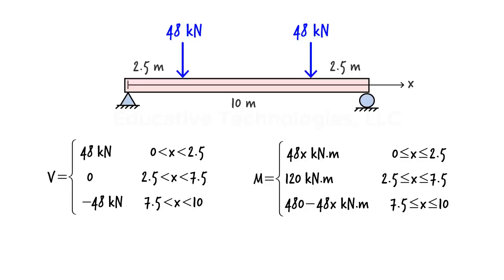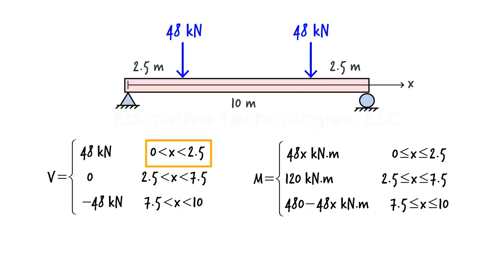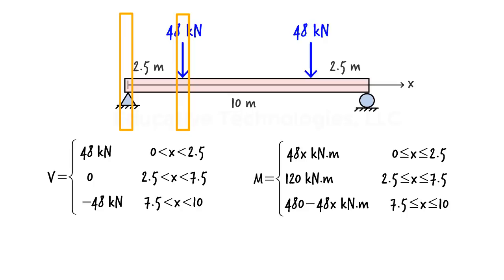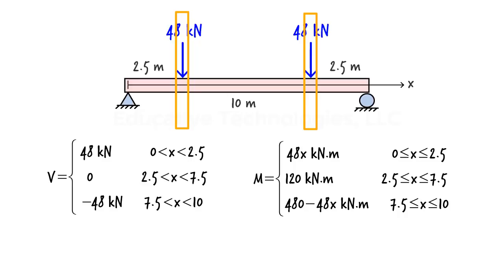For each bending moment equation, the interval for x includes its boundary values. For example, the first bending moment equation is valid for any x between 0 and 2.5, including at 0 and 2.5. However, the first shear equation is valid only for x values strictly between 0 and 2.5, because shear cannot be defined at the point of application of a concentrated load. The same principle applies to all segments: shear does not exist at x equals 2.5 and x equals 7.5 for the middle segment, and at x equals 7.5 and x equals 10 for the right segment.